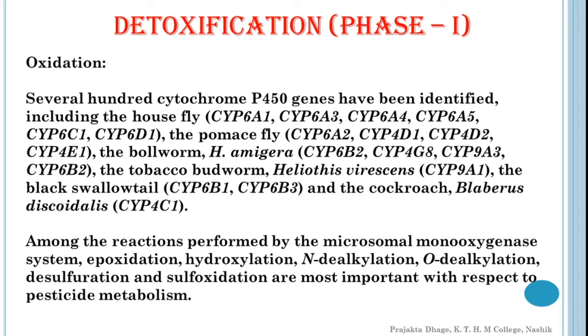Each form is coded for by its own gene. To date, several hundred cytochrome P450 genes have been identified. These are some of the genes which are present in some of the insects. You can read it out over here.